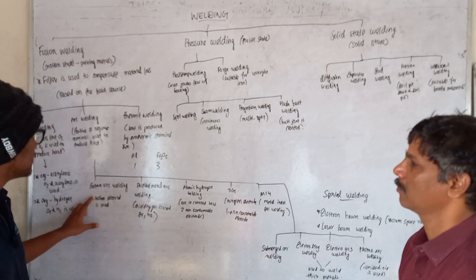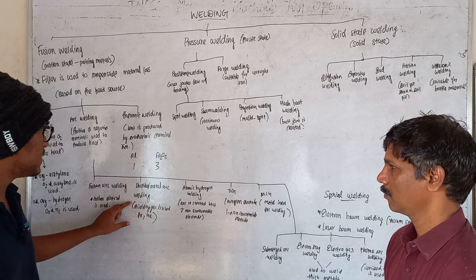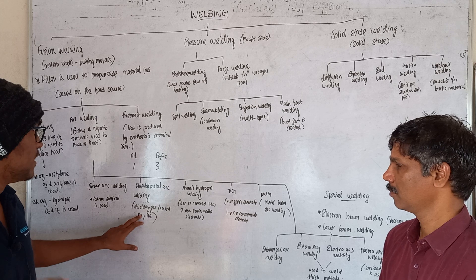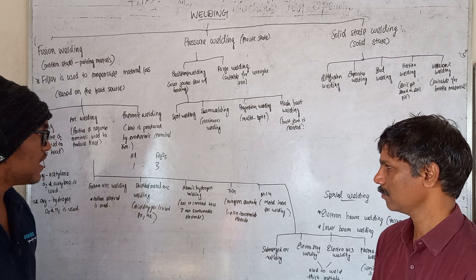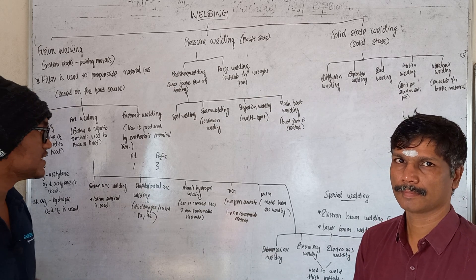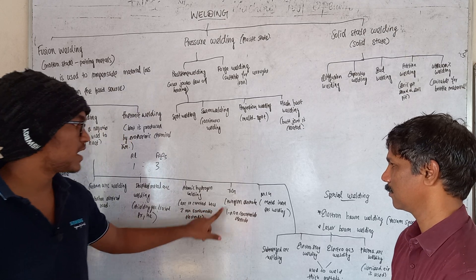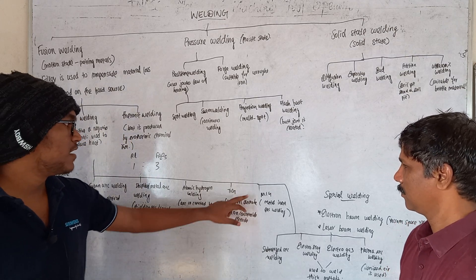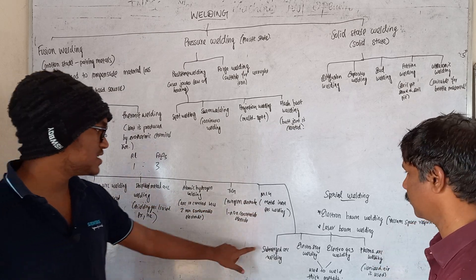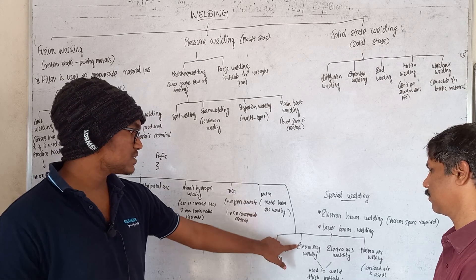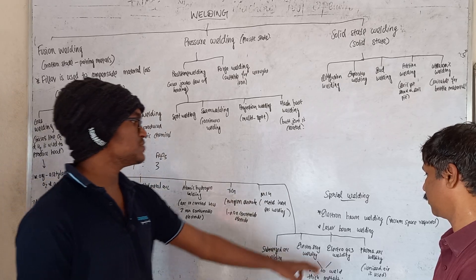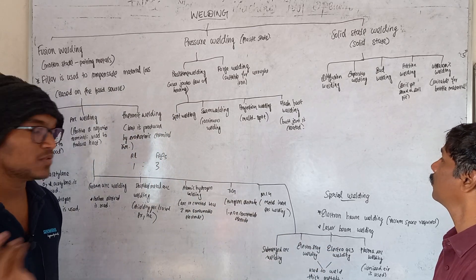In carbon arc welding, we use a carbon electrode. In shielded metal arc welding, the shielding gas used is argon or helium. For atomic hydrogen welding, there are two non-consumable terminals. For TIG welding, we use a tungsten non-consumable electrode. In MIG — metal inert gas welding — an inert gas is used. For electro-slag and electro-gas welding, thick metals are welded. In plasma arc welding, plasma is ionized gas that is used to weld.